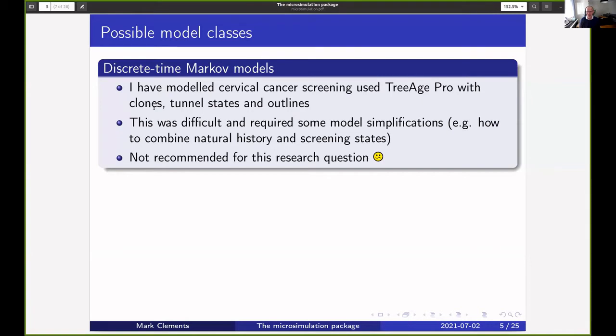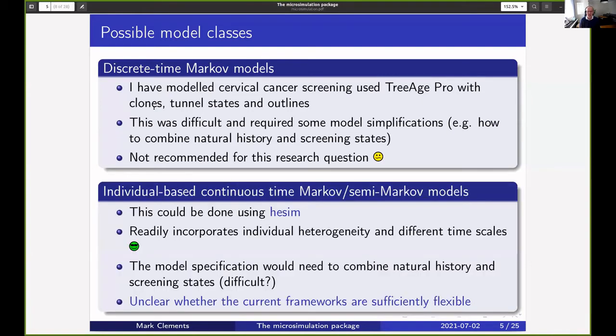An alternative would be to use individual-based continuous time Markov or semi-Markov models, such as using P-sim. That's really nice because you can incorporate individual heterogeneity well and you can have different time scales. But the challenge is for the model specification: how do we combine the natural history and the screening states? It's unclear whether the current frameworks are sufficiently flexible.